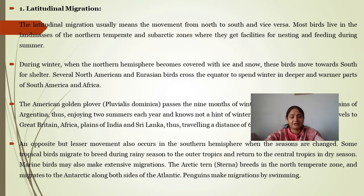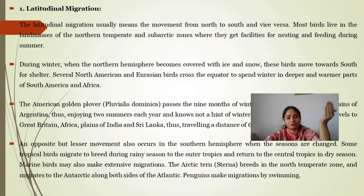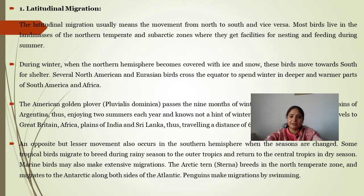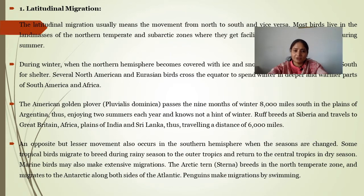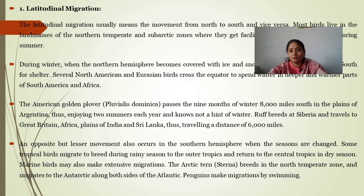During winter, when the northern hemisphere becomes covered with ice and snow, these birds move toward the south for shelter. Several North American and Eurasian birds cross the equator to spend winter in the deeper and warmer parts of South America and Africa. The American golden plover spends 9 months of winter 8,000 miles south in the plains of Argentina, thus enjoying two summers each year and knowing not a hint of winter — their entire year is summer.